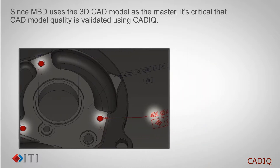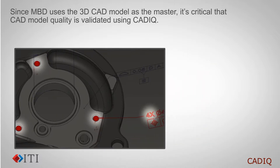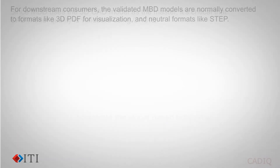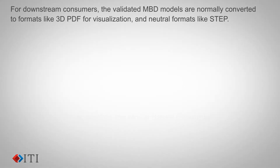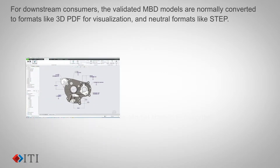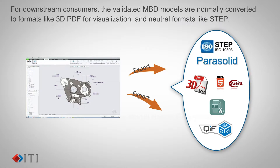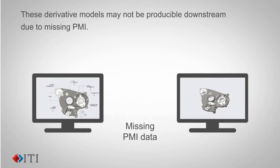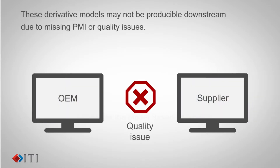Capturing issues before data is sent downstream allows for quick resolution, prevents wasted time, and minimizes risk. For downstream consumers, the validated MBD models are normally converted to formats like 3D PDF for visualization and neutral formats like STEP. These derivative models may not be producible downstream due to missing PMI or quality issues.